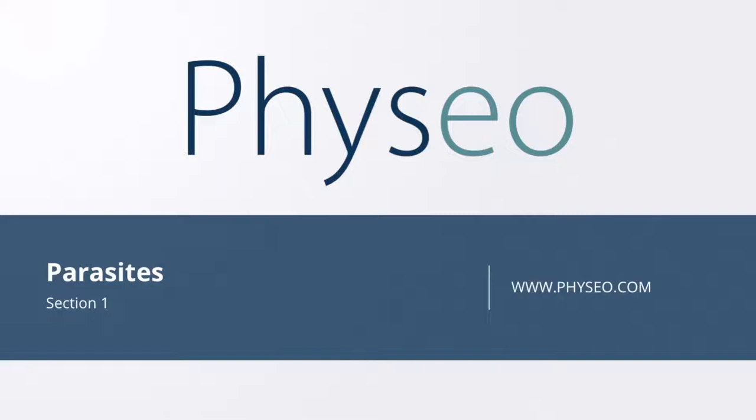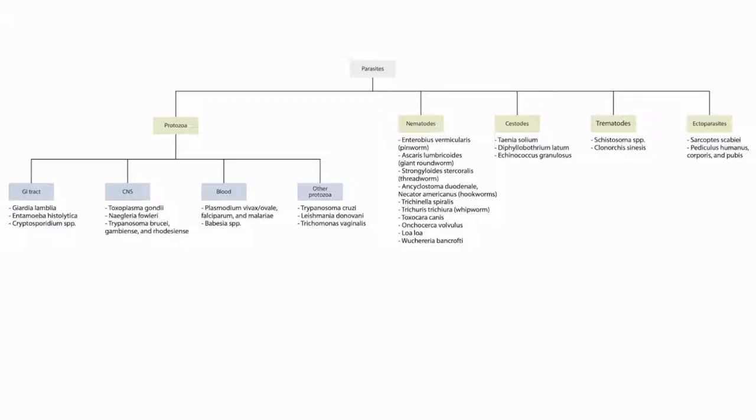Welcome to section one of the parasites. This is our overview figure showing the parasites that you need to know for step one. In this lecture, we will be talking about the first protozoa that infects the GI tract, Giardia lamblia, which you can see right here.